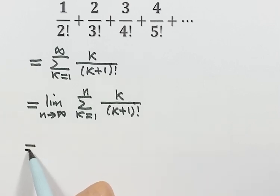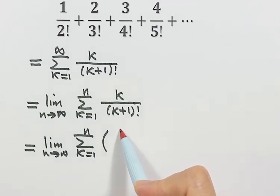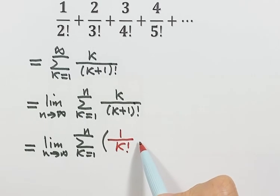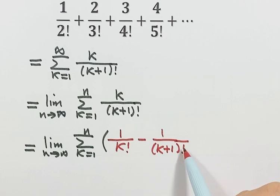Then the next step, we can rewrite this fraction. We can rewrite it as a difference of two fractions. So we can put it as 1 over k factorial, then minus 1 over k plus 1 factorial.